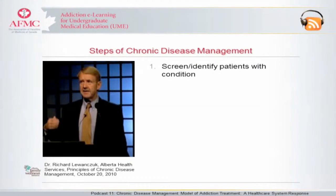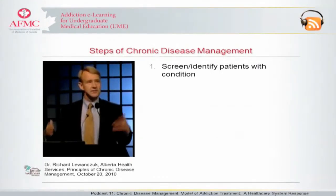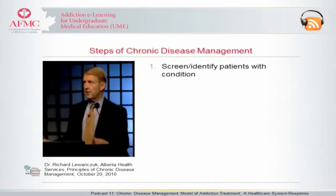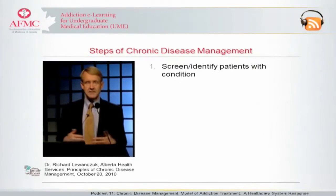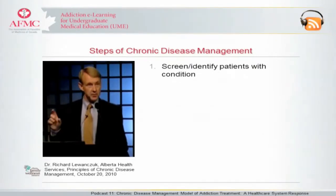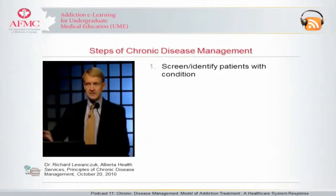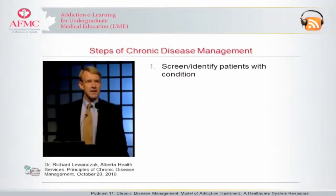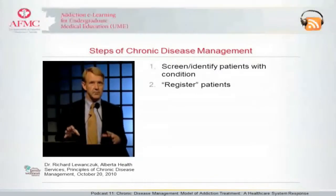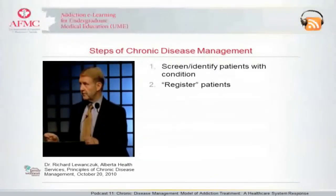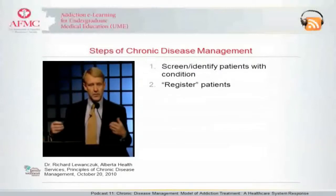You would screen and then identify people with your particular chronic condition. If you're interested in diabetes, how many people are there with diabetes in my individual primary care practice? That implies systematic screening for everyone, because we're responsible for the whole population — that whole group of my patients as a practitioner. We'd then want to register a person — basically create a list so that we know who those people are and we're not going to lose anybody or let them fall between the cracks in whatever we decide to do with them.